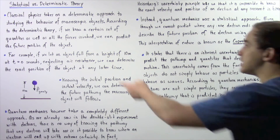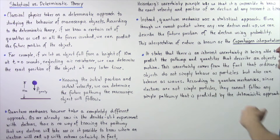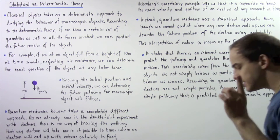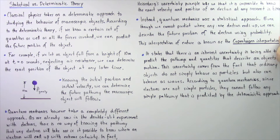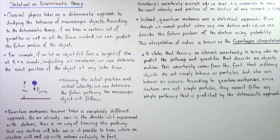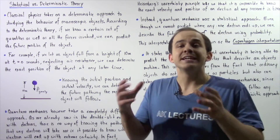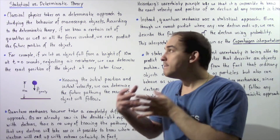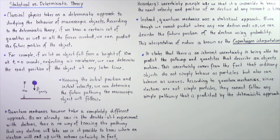So instead of using the deterministic approach that classical physics uses, quantum mechanics uses a different theory known as the statistical theory. Even though we cannot know with exact certainty where any one electron will actually end up, we can describe the future position and velocity of an electron using probability. This interpretation of macroscopic and microscopic objects is known as Copenhagen's interpretation.